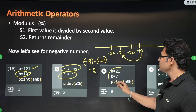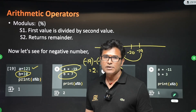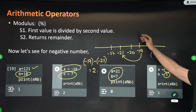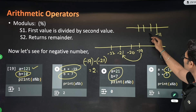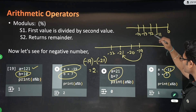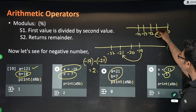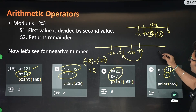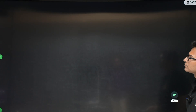If a equals 21 and b equals 7, it is directly a multiple of 7, so the result is 0. Another example: a equals minus 11, b equals 13 — on the number line, the largest number less than minus 11 that is a multiple of 13 is minus 12. So minus 11 minus (minus 12) equals 1.